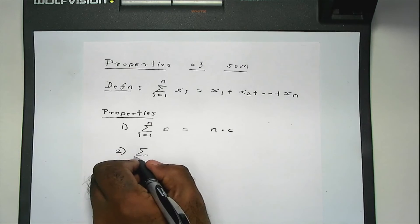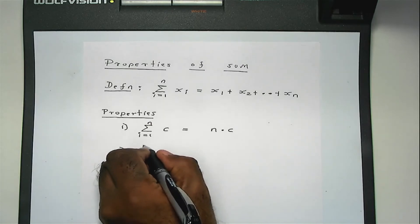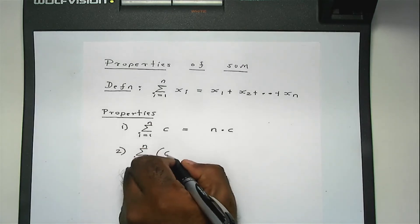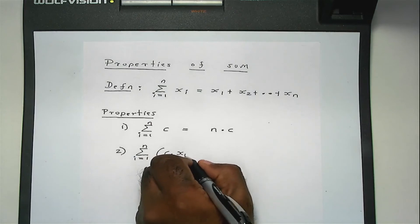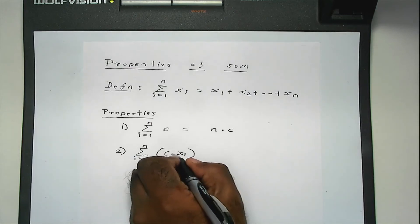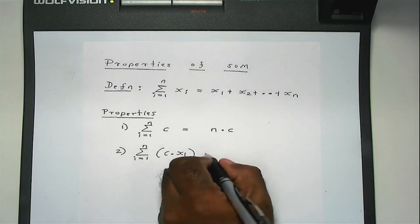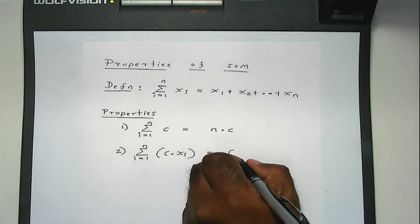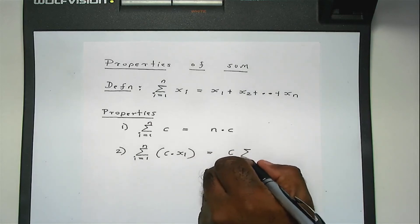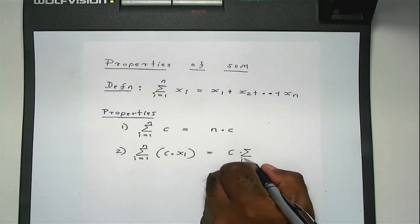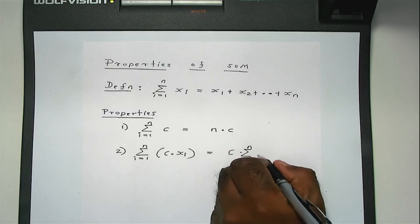Number two: sum I from 1 to n of a constant multiplied by XI—so constant multiplying inside—this is the same as the constant outside multiplying the sum from 1 to n of XI.